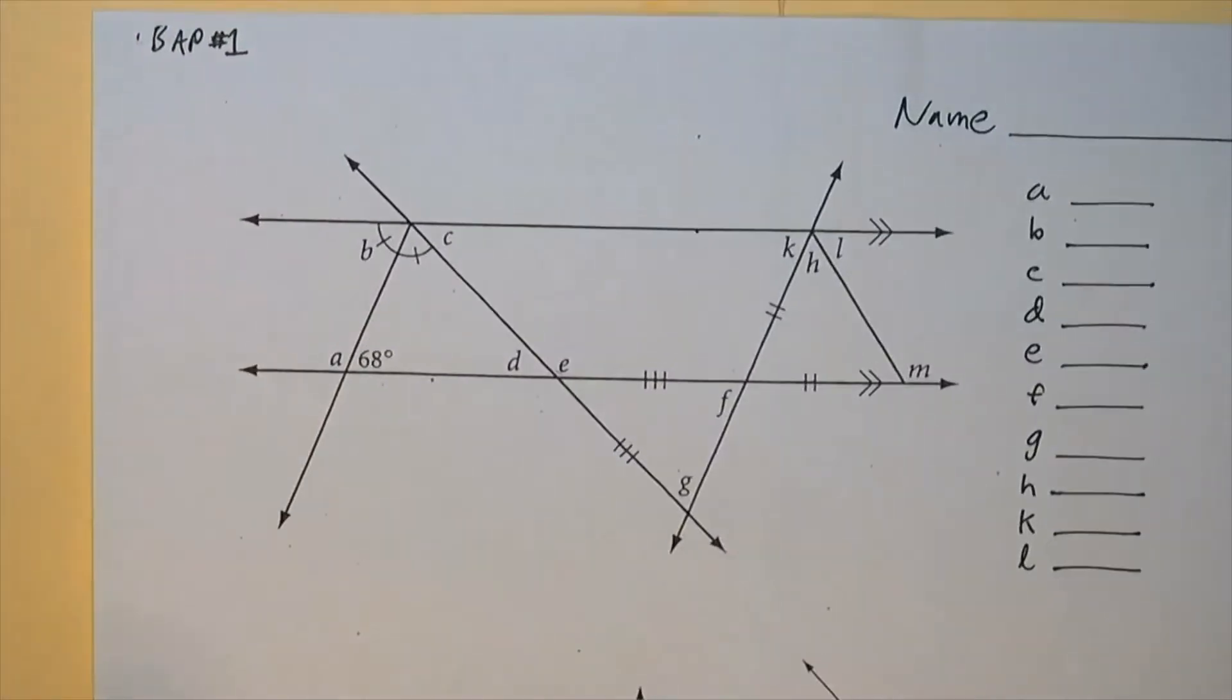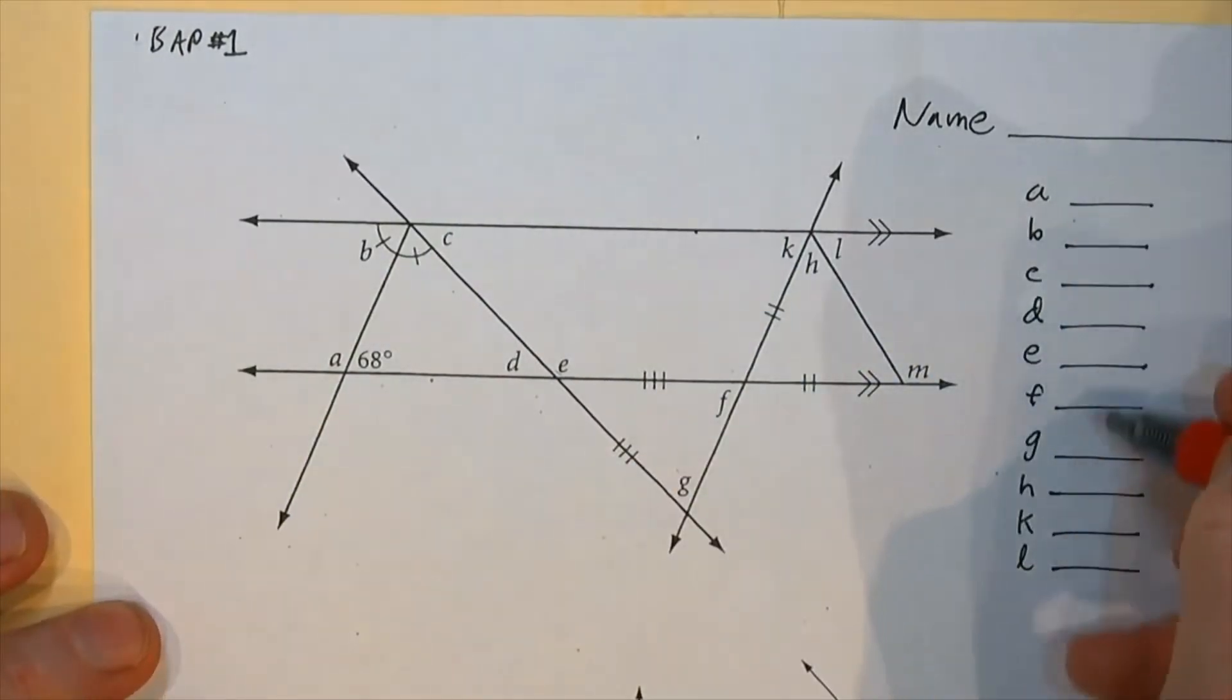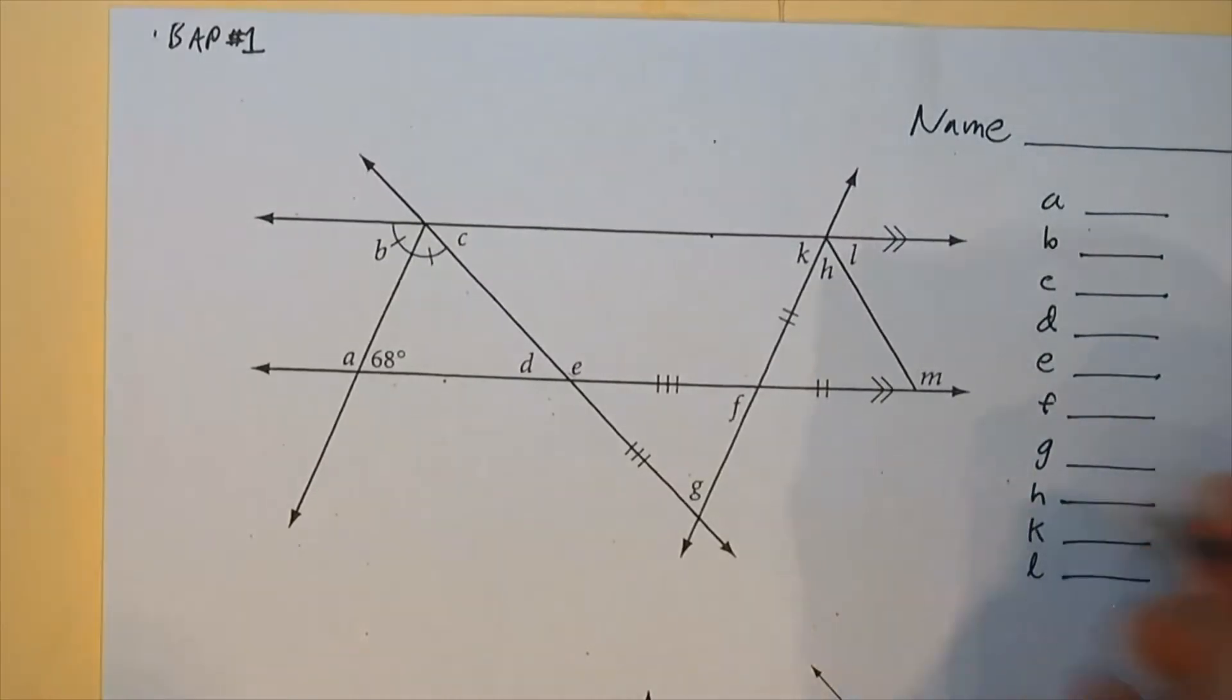All right, so when you do these problems, one of the keys is to write in all the angles as you work these out. Don't just fill in this list. You can't do these in order because you don't know which letter you'll find first. You might find H first.